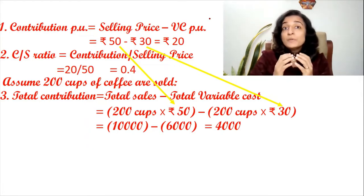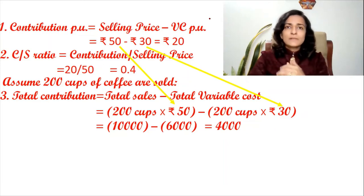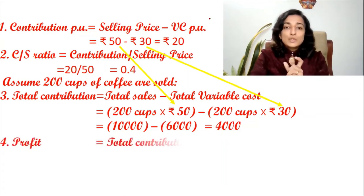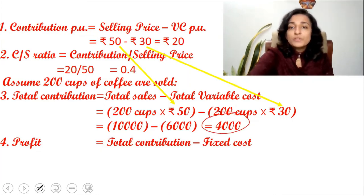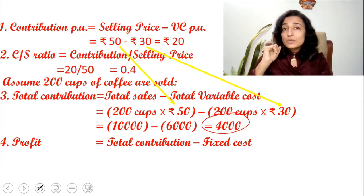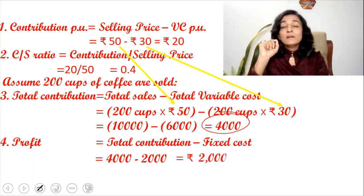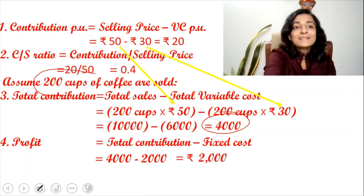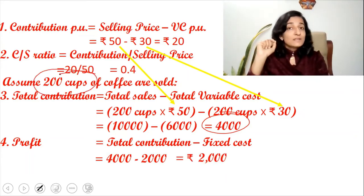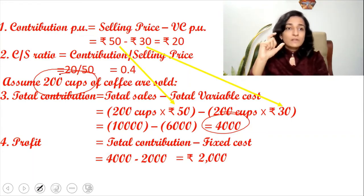Next, we want to know the profit earned when selling 200 cups. The profit formula is: total contribution minus fixed cost. Total contribution is 4,000 rupees, and assuming fixed cost is 2,000 rupees, the profit = 4,000 − 2,000 = 2,000 rupees. So far we have learned four formulas: contribution per unit, C/S ratio, total contribution, and total profit.